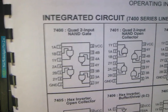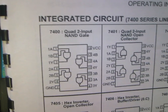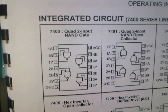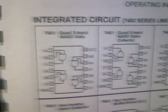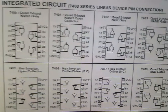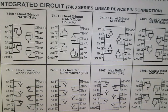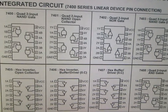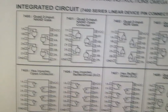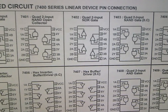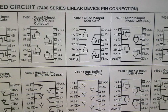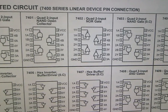Looking at the 7400 quad 2-input NAND gate: pin 1 and 2 are inputs, 3 is the output; 4 and 5 are inputs, 6 is the output. On the other side, 9 and 10 are inputs with 8 as output, and 12 and 13 are inputs with 11 as output. For the 7402, pin 14 is VCC, pin 7 is ground, pins 2 and 3 are inputs, and pin 1 is the output. The inputs and outputs of the other gates follow the same pattern.